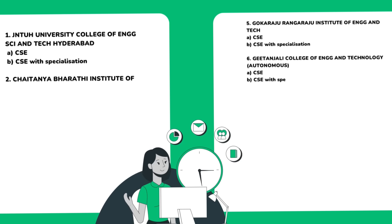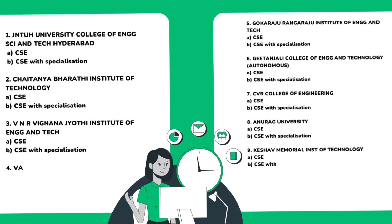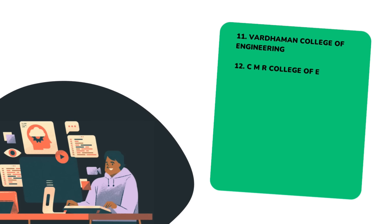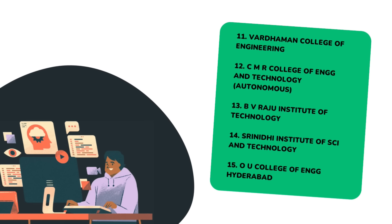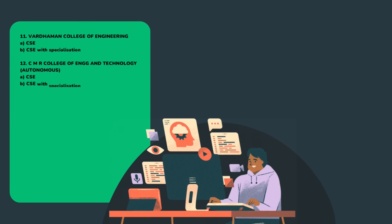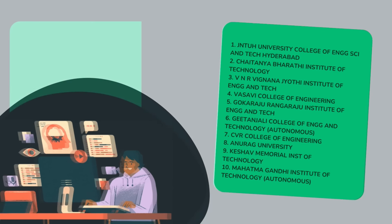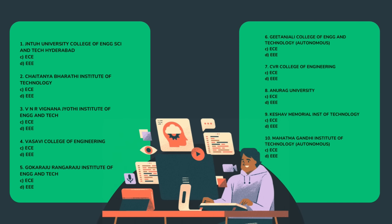I would highly recommend: first, top 10 colleges — CSE and CSE specialization in this particular order. After that, top 11 to 15 colleges — CSE and CSE specialization. And after that, top 10 colleges — ECE and EEE, which are similar. Here, this order is what you have to decide.